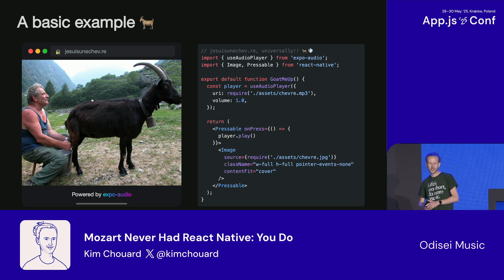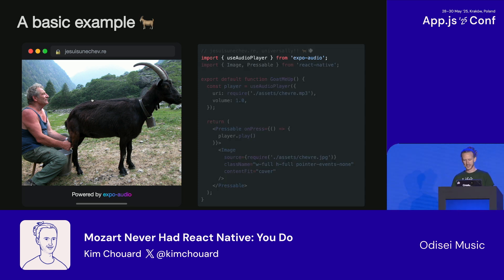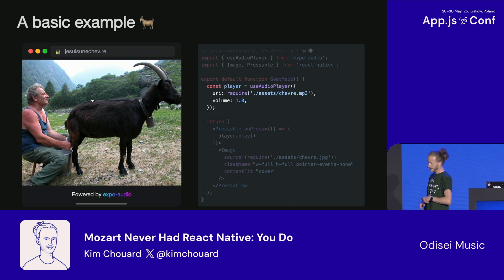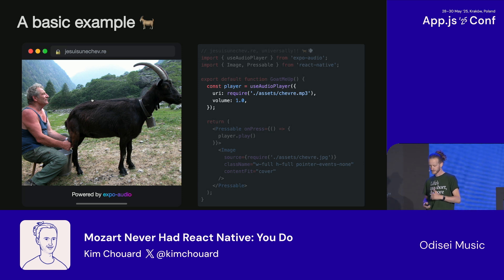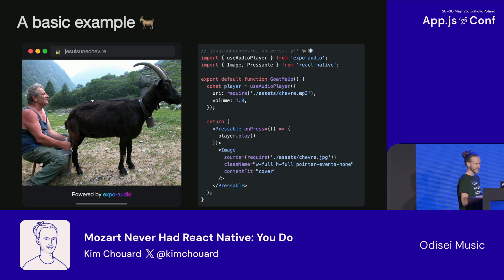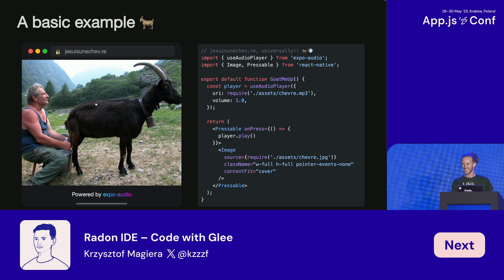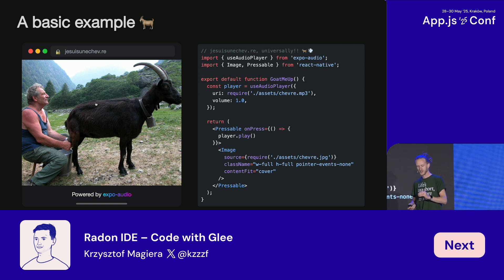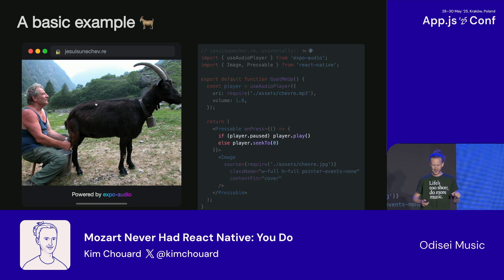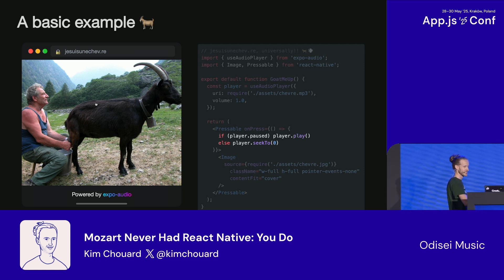Expo released Expo Audio, branching out of Expo AV with a more modern API. The way you use it: you instantiate it with a hook, pass it a sound, and then just press play. The good news with Expo Audio is it gives you instant feedback on the states synchronously. So you can say: is the player playing? If it's not, start it. If it is, restart at zero. So you can start having some fun.